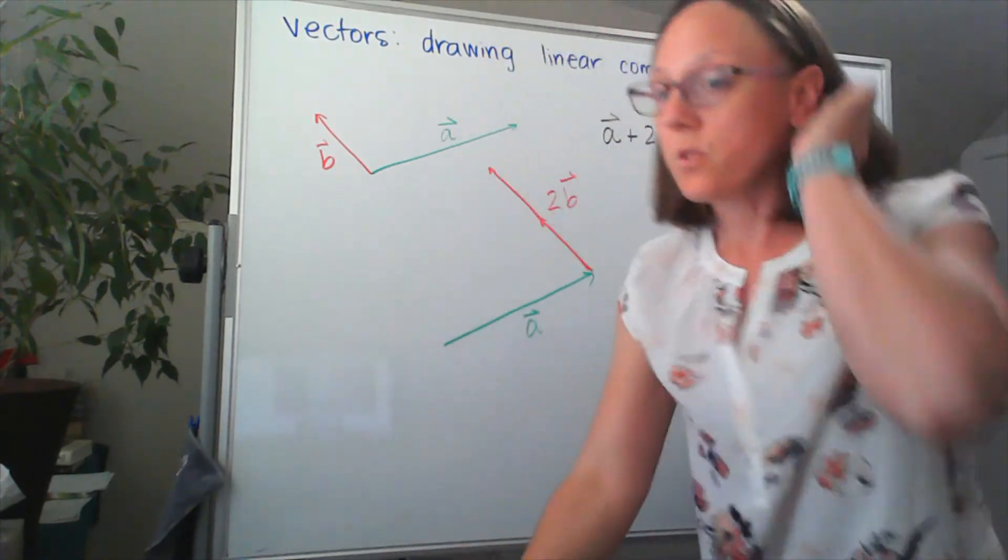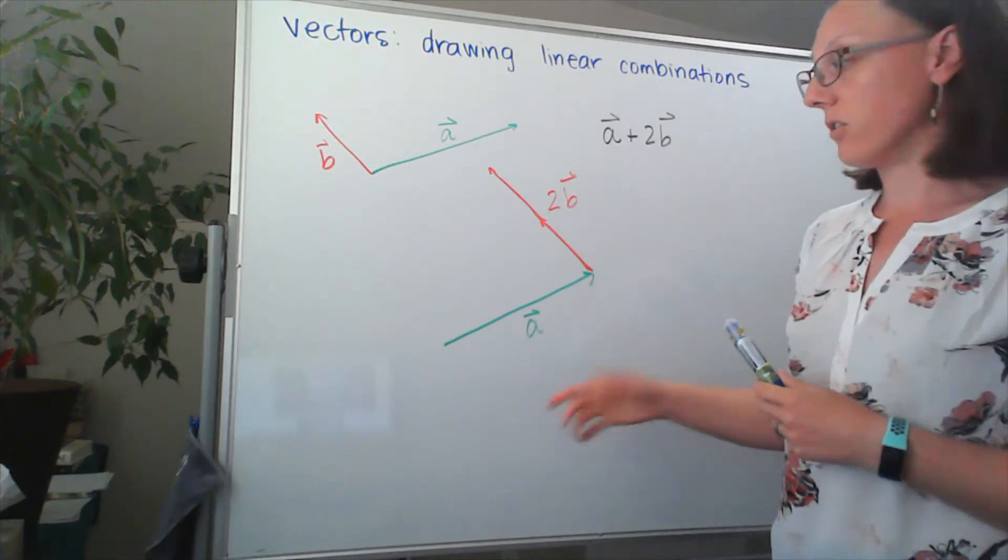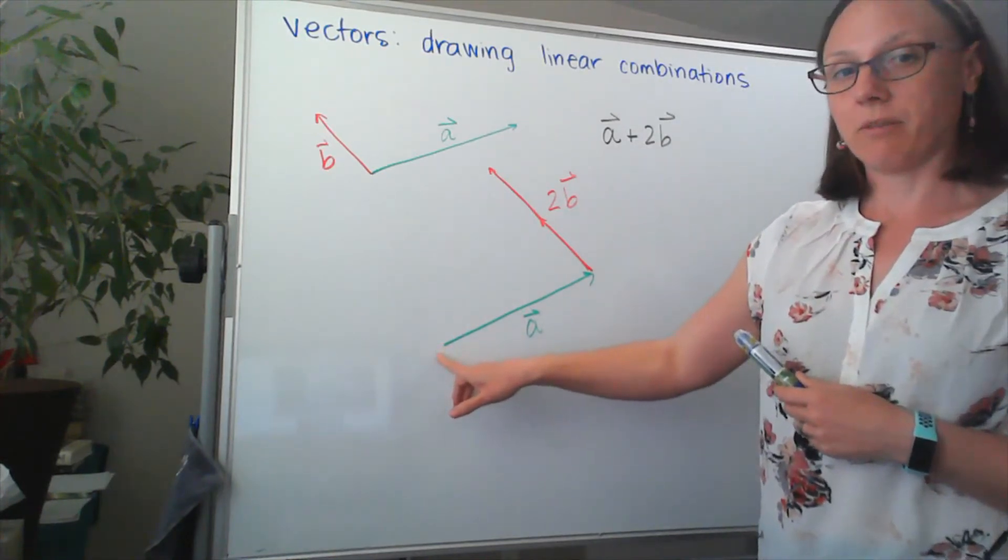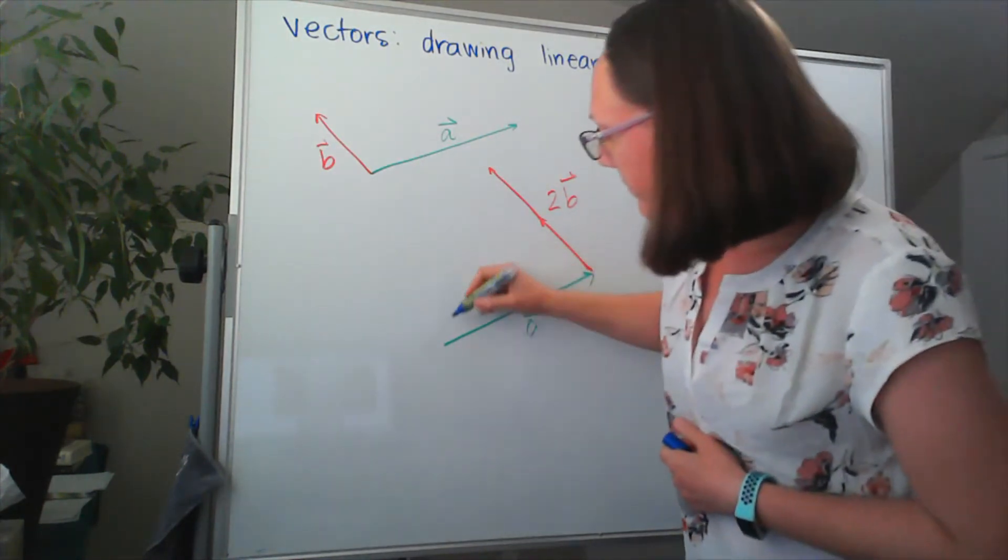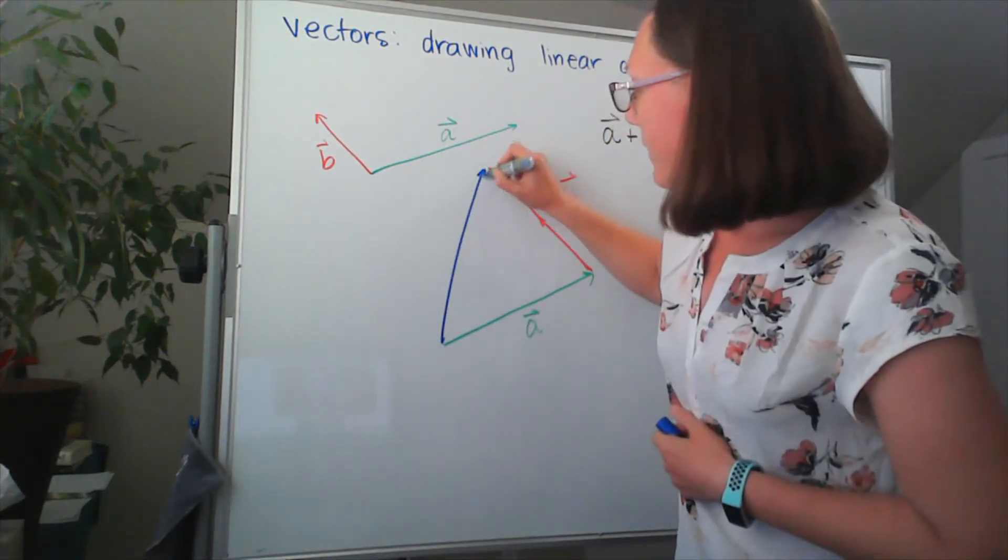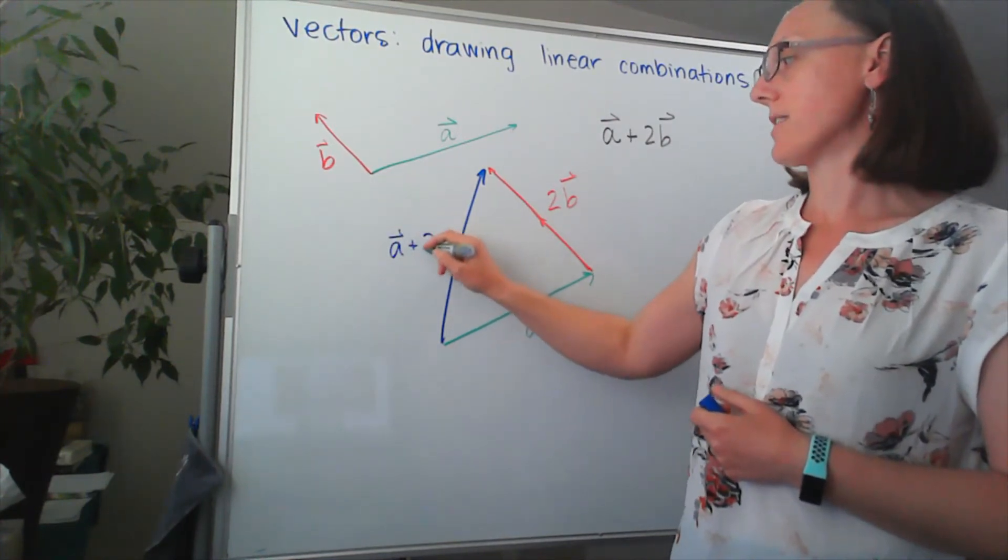When I add those two vectors, the result is the diagonal that stretches from the tail of my first vector to the head of my second vector. So that would be my resulting vector for A plus 2B.